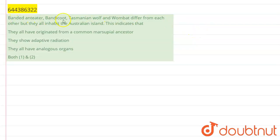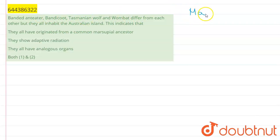Bandicoot, Tasmanian wolf, and wombat — they differ from each other but they all inhabit the Australian island. What this indicates is that all these animals are marsupial mammals and they have descended from a common ancestor.